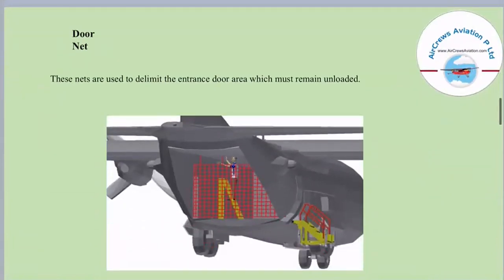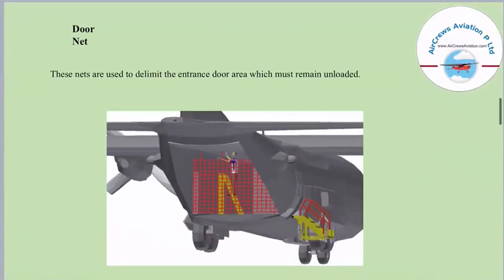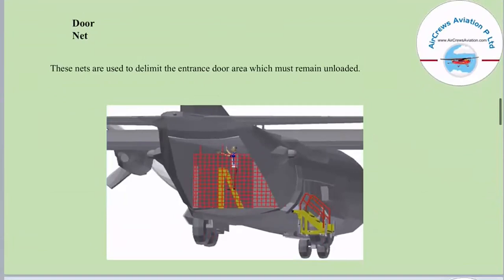Next we have the door net. These nets are used to delimit the entrance door area, which must remain unloaded. The door nets are positioned at the door place to delimit the entrance door area which must remain unloaded.